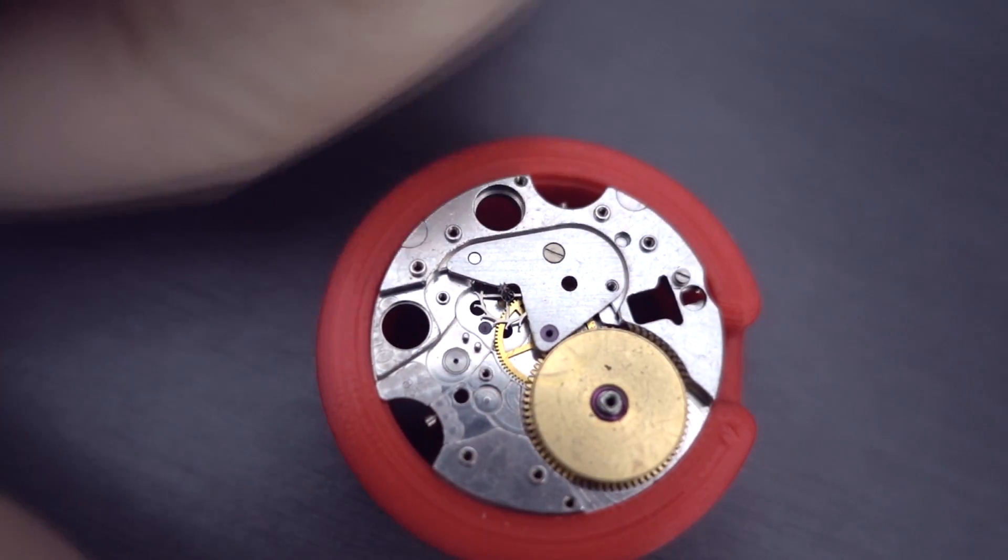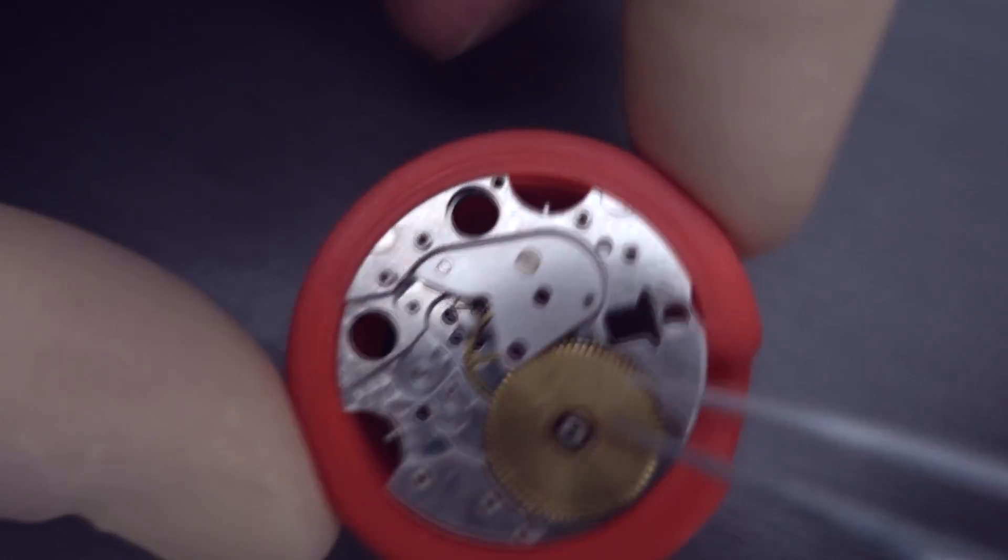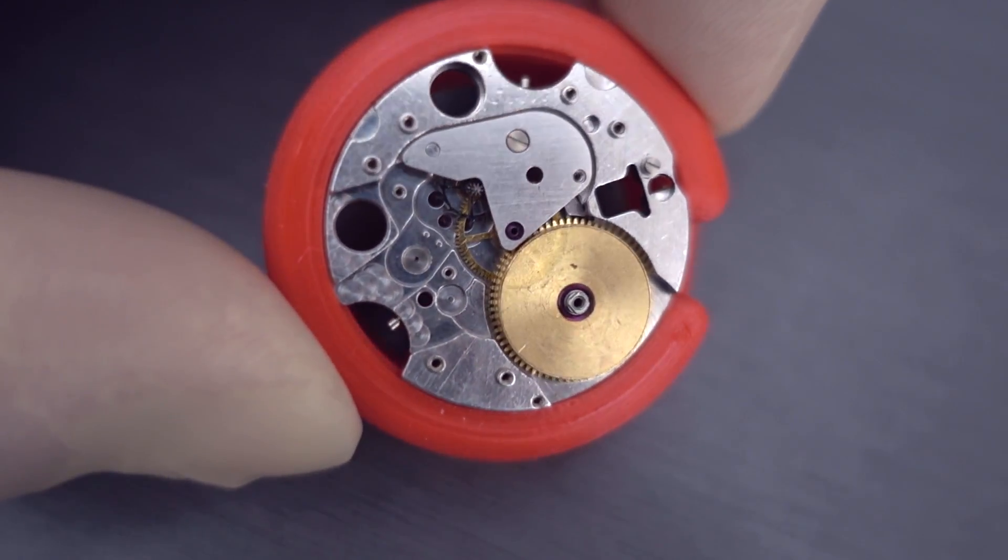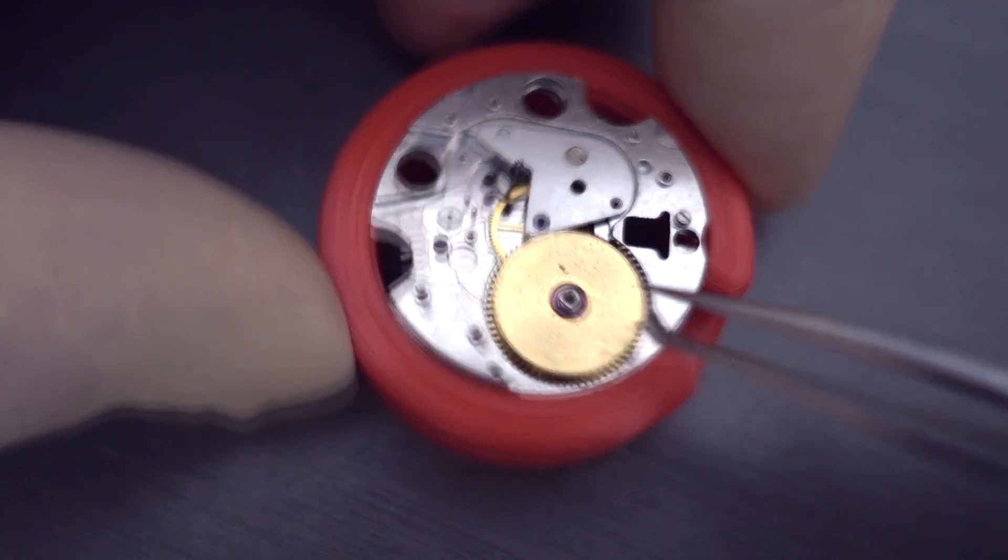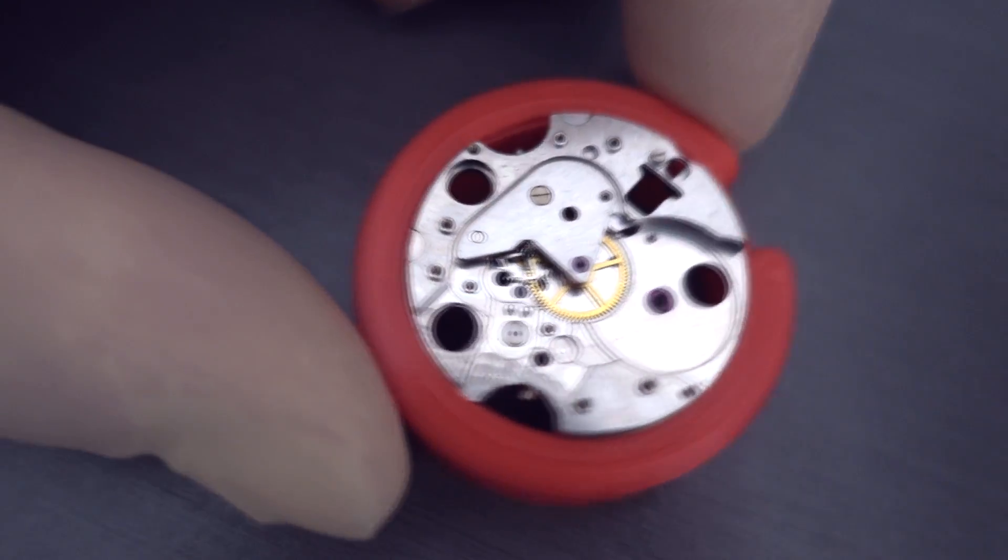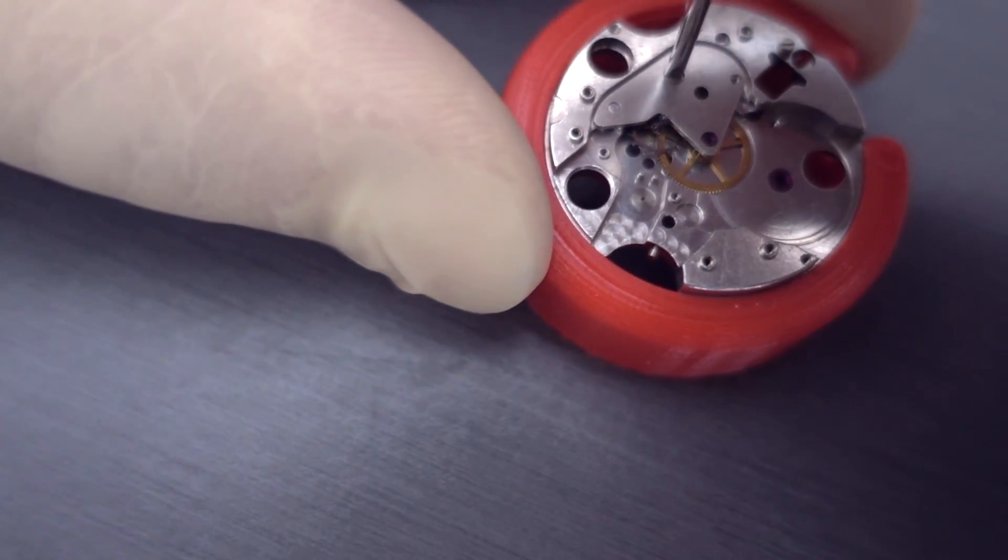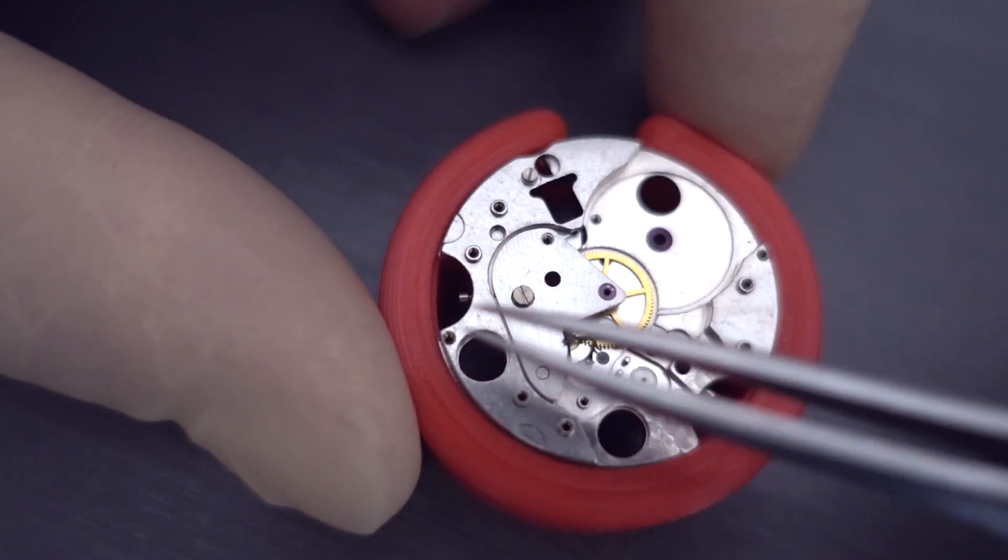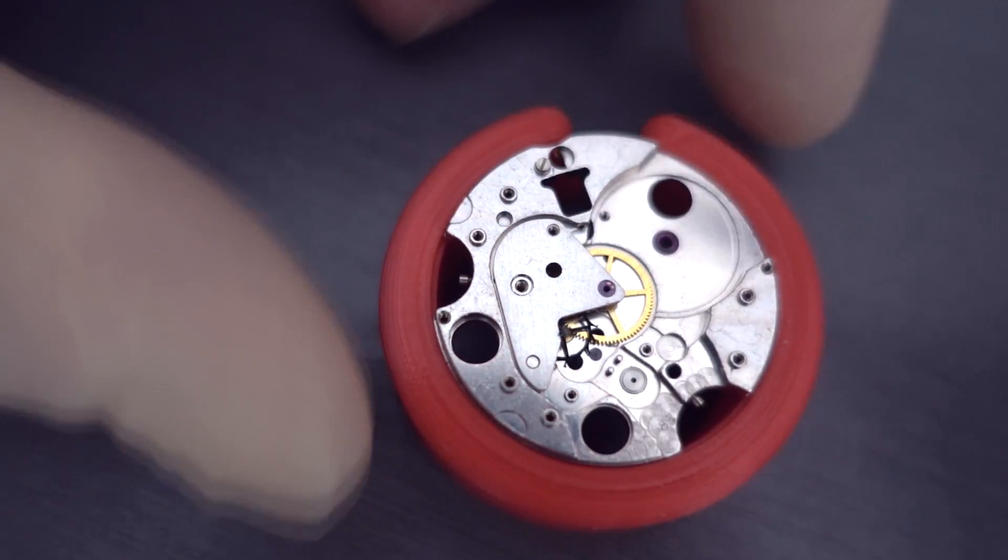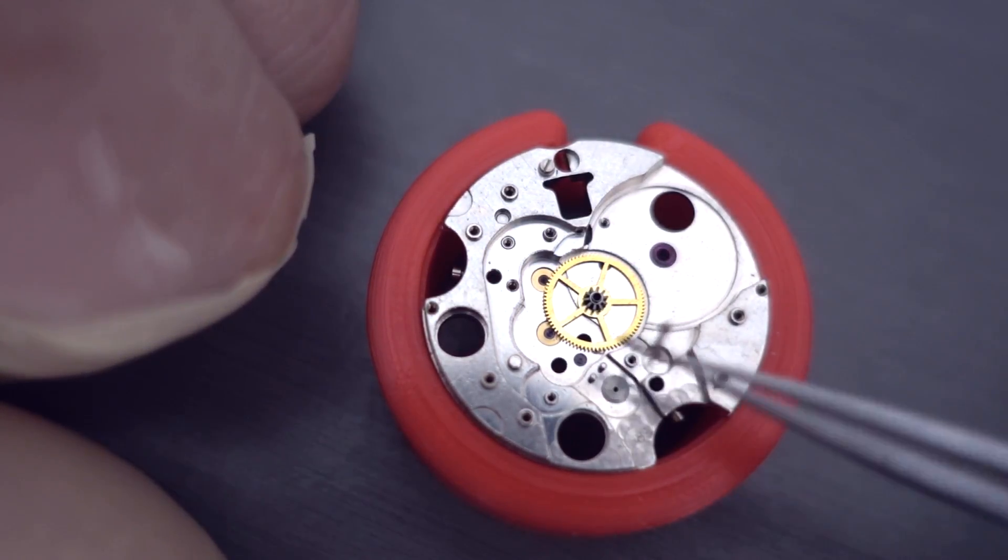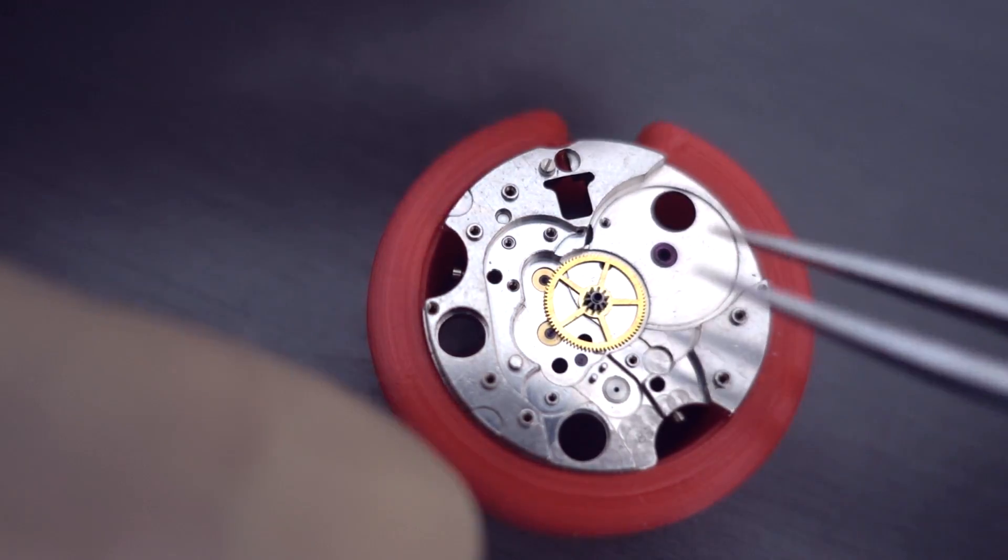And there's the third wheel. And we're just taking out the barrel. You can see some chunks of stuff there as well. Now I haven't done a teardown of the case on this because it's basically the same as the 4402. So if you want to see how the case goes together just have a look at that. And there's the escape wheel and the center wheel. And now you have the whole movement torn down.